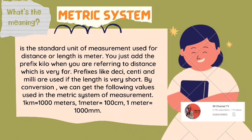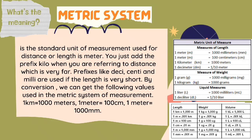What's the meaning of metric system? The standard unit of measurement used for distance or length is meter. You just add the prefix kilo when you are referring to distance which is very far. Prefixes like deci, centi, and milli are used if the length is very short. By the conversation, we can get the following values used in the metric system of measurement: One kilometer is equal to 1,000 meters. One meter is equivalent to 100 centimeters. And one meter is equivalent to 1,000 millimeters.